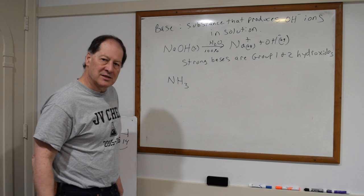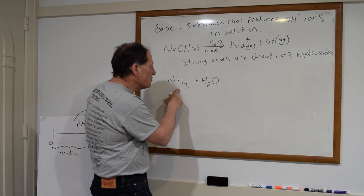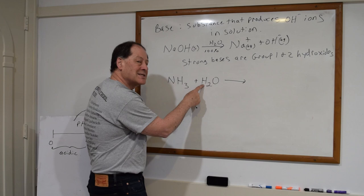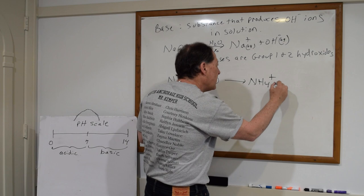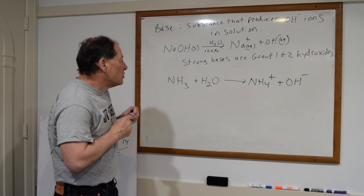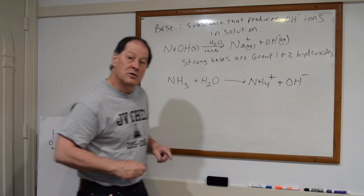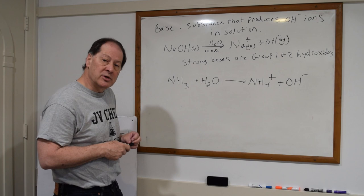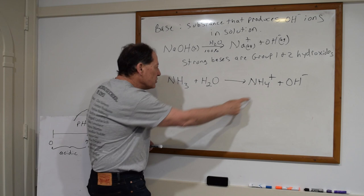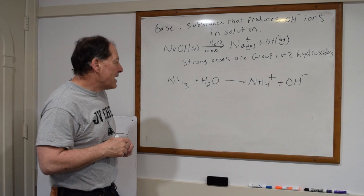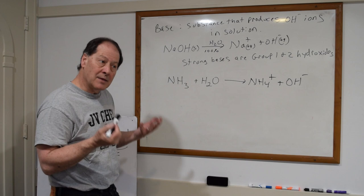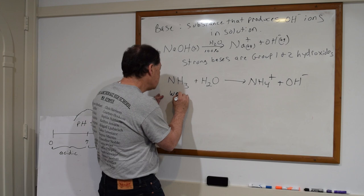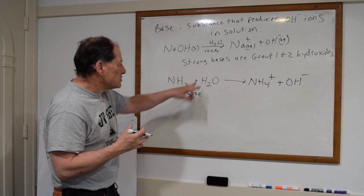You might look at ammonia and say, well, there's no hydroxide in there — how could that be a base? If we look at the reaction of ammonia with water, this base is going to accept a proton from water and form NH₄⁺. What's left of the water molecule is a hydroxide ion. So the first definition: a base produces hydroxide ion in solution. The second definition: a base is a proton acceptor — it accepts a proton from the water molecule, leaving hydroxide in solution.